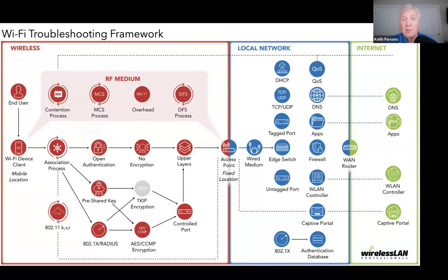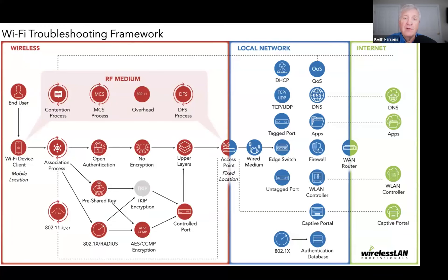I developed this probably four or five years ago for the first Ekahal troubleshooting class. I wanted to look at what happens when people troubleshoot Wi-Fi - it's not always the RF. Sometimes it's the RF contention in the RF medium. Sometimes it's in the process flows. There's a little bubble for every step that takes place during network communications. Some are red - the Wi-Fi RF versions. Some are blue - on your local network. Some are green - on the WAN.